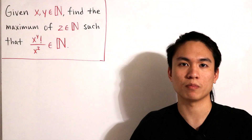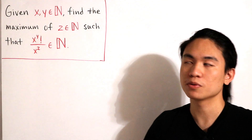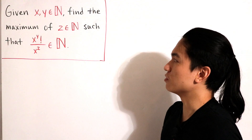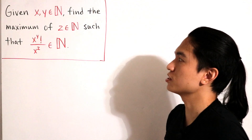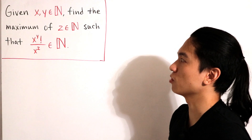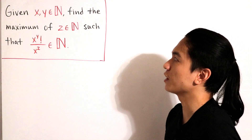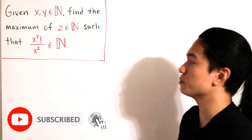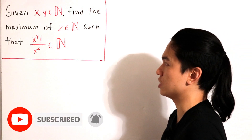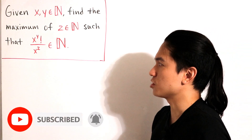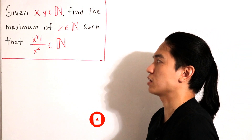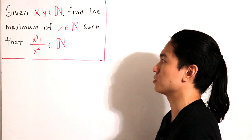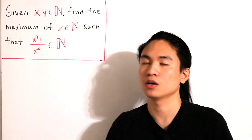Welcome back to another video. Here we are given a number theory problem that states: given x and y are natural numbers, we want to find a maximum natural number z such that x to the power y-factorial divided by x to the power z is a natural number.